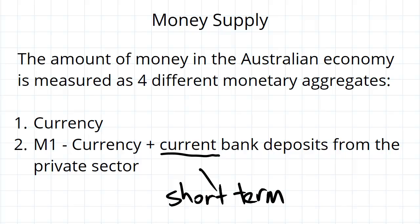A measure like M1 can be useful if you're trying to get an idea of the amount of money that is being actively used in the economy — the amount of money that is actually being used.